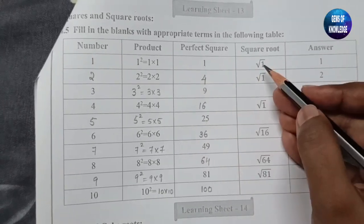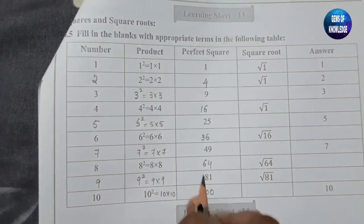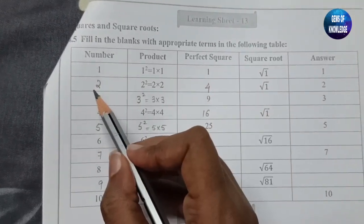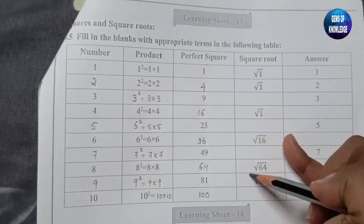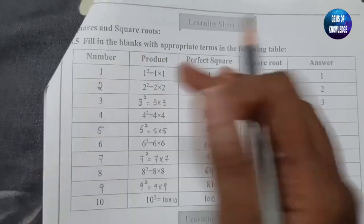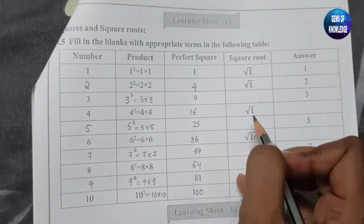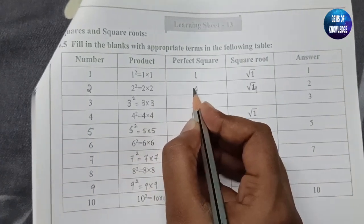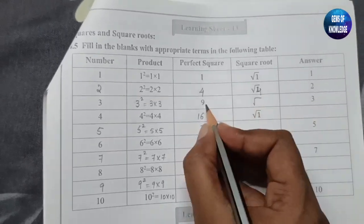Now, the square root of a perfect square — the square root of 1 is 1. If you square 1 into 1 you get 1, 2 into 2 gives 4, 3 into 3 gives 9, 4 into 4 gives 16. To find the square root, you reverse this: the square root of a number gives back the original number. So square root of 1 is 1. Note there is a printing mistake — it should be 4; the square root of 4 equals 2. Similarly, for 3, we need the square root of 9, which is 3.